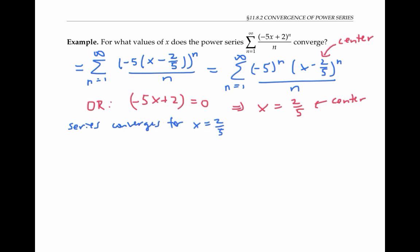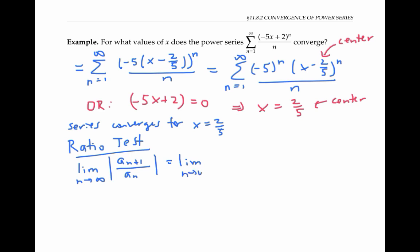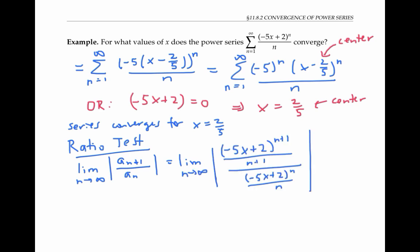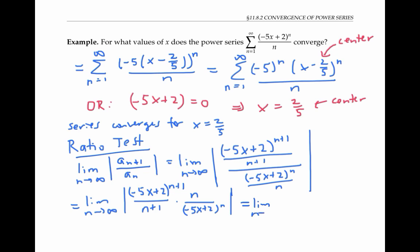But it might converge for other values of x, so let's use the ratio test to find them. We start the same way as usual, by taking a limit of the ratio of the (n+1)th to the nth terms, then simplify by flipping and multiplying. After canceling, we get the limit of |−5x + 2| times n/(n+1). As n goes to infinity, n/(n+1) goes to one, and −5x+2 doesn't depend on n. So this final limit is just the absolute value of −5x + 2.